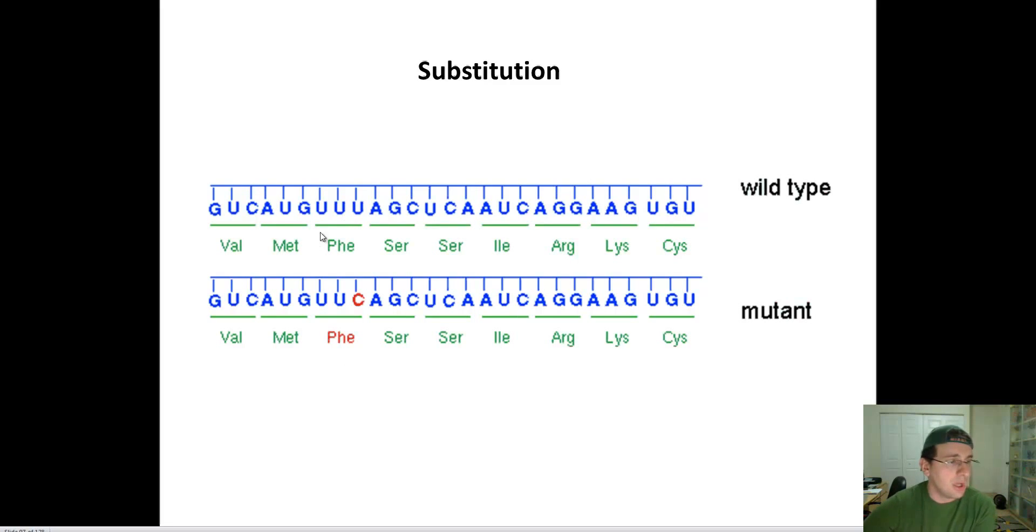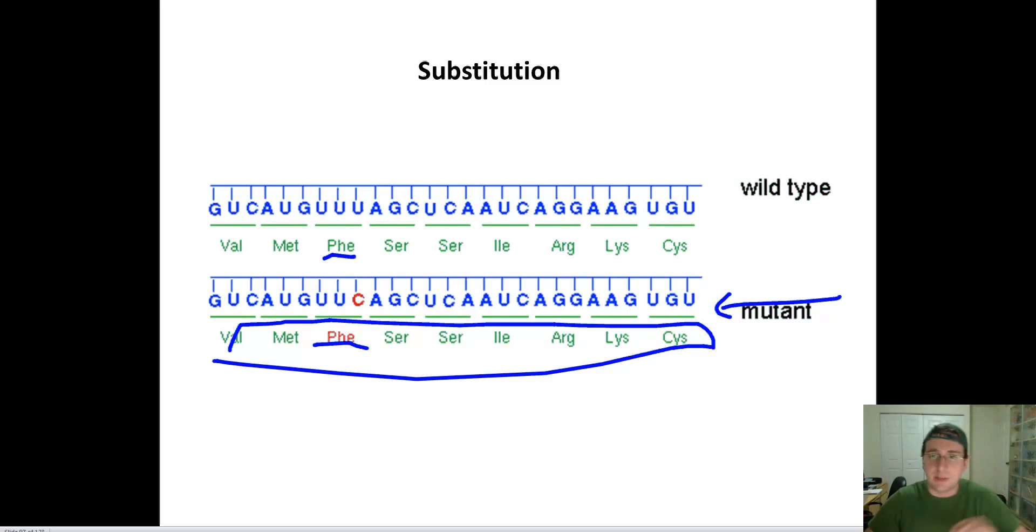Another one is called substitution. A single substitution of this particular gene right here will change the protein. But in this case, both UUC and UUU both stand for PHE. There's redundancy in the genetic code. In this case, the word UUU and the word UUC mean the same thing. Even though this is mutant DNA, this will be the same protein. Since the protein is identical, nothing really changes. Sometimes mutations will not create a change in the phenotype because of this redundancy in the DNA code.